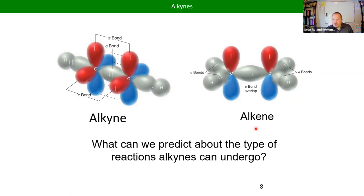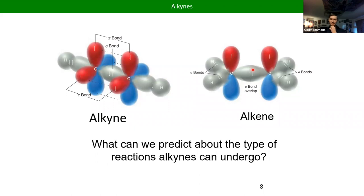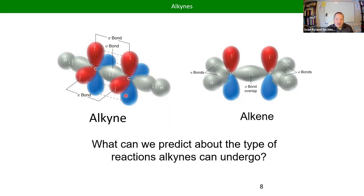What did we know about alkenes when it came to reactivity? They always react at the pi bond — we break the pi bond and add something to each side. Alkynes are very similar; we just have two pi bonds. Some alkene reactions will be the same, just done twice. Others happen once but are subtly different because the intermediate can rearrange — we'll see that with hydration reactions when we make enols where the OH is directly attached to the alkene. We're not really adding new mechanisms, other than some rearrangements.